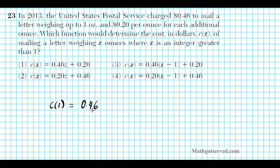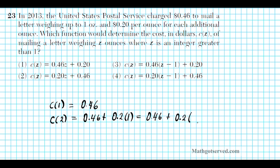For 1 ounce, the USPS charges 46 cents — 0.46 dollars — think of this as the flat rate. When you exceed 1 ounce, an additional charge kicks in: 20 cents per additional ounce. For 2 ounces, you have the base rate 0.46 plus 0.2 times the number of ounces above 1. Since 2 is 1 unit above 1 ounce, it's 0.46 plus 0.2 times 1, which we can rewrite as 0.46 plus 0.2 times (2 minus 1).